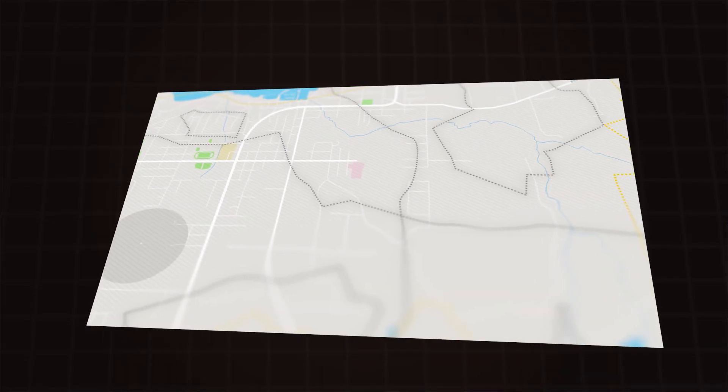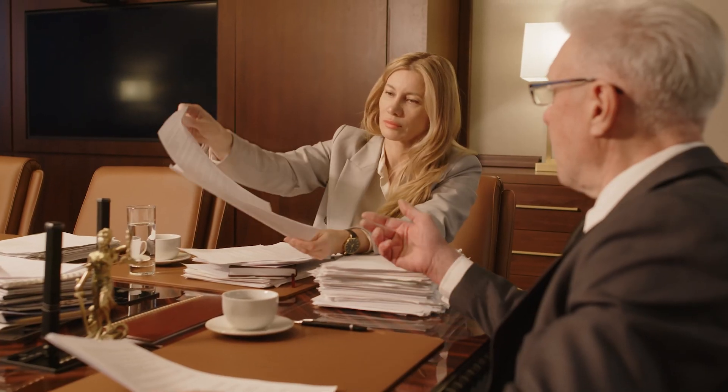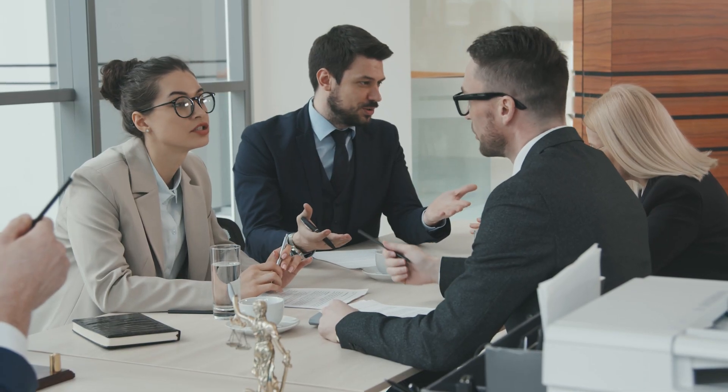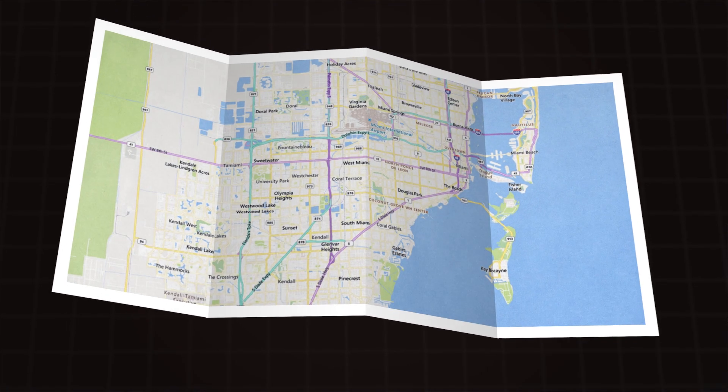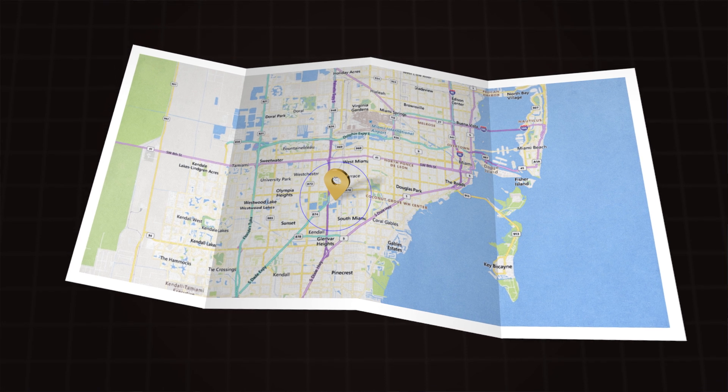When it comes to expanding your ranking radius, there's not a whole lot you can do about proximity because you are at the mercy of where people are searching. On top of that, competition plays a huge role. In Miami, you shake a tree and 50 personal injury attorneys fall out. But in Boise, Idaho, that ranking radius could go from 0.05 miles to 10 or 15 miles just because of the lower density of competition.